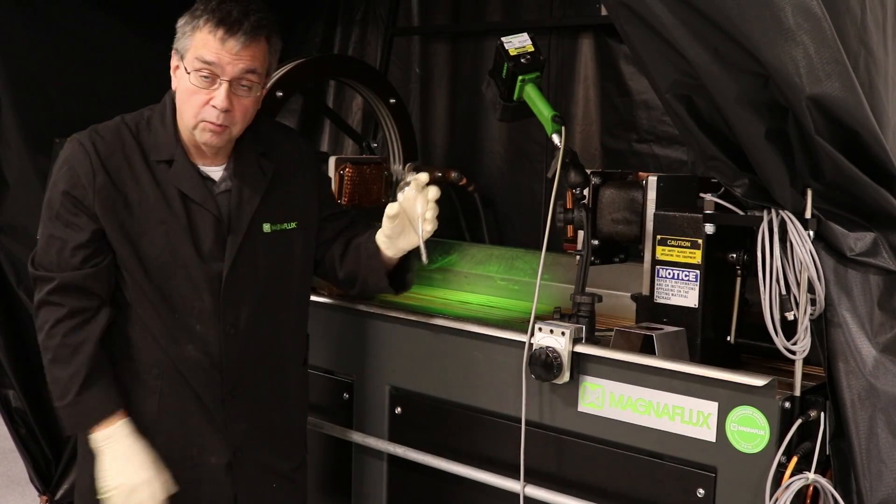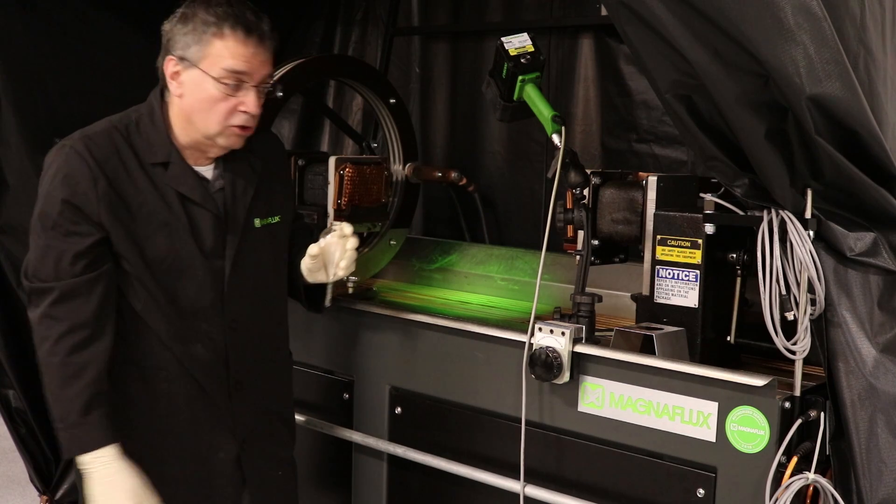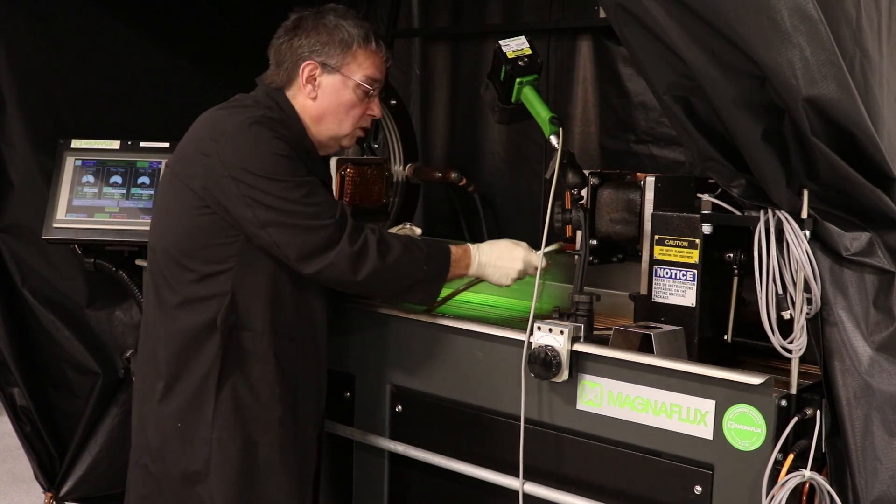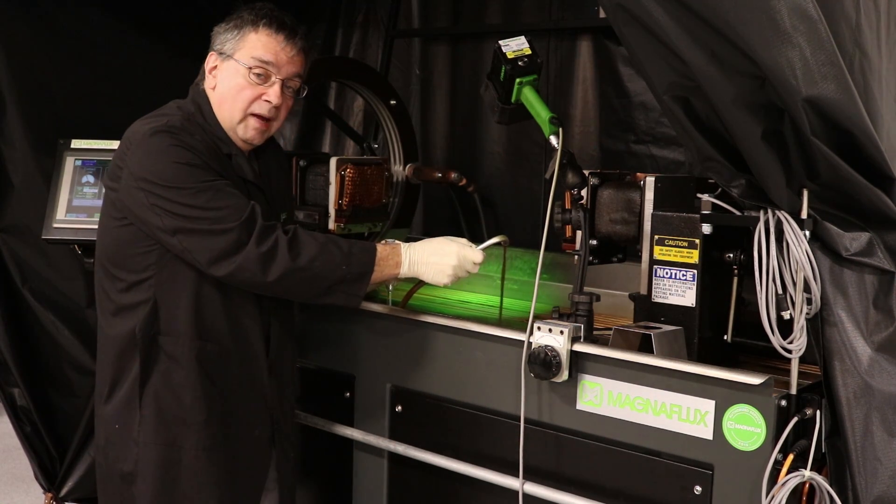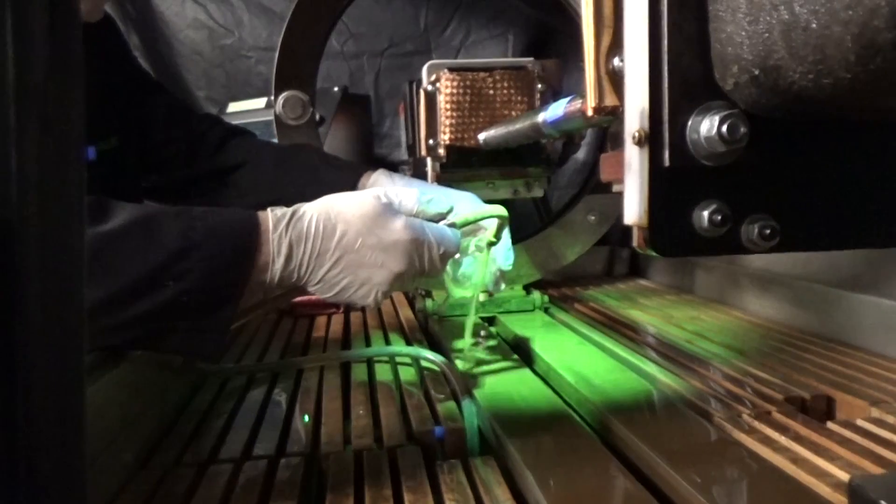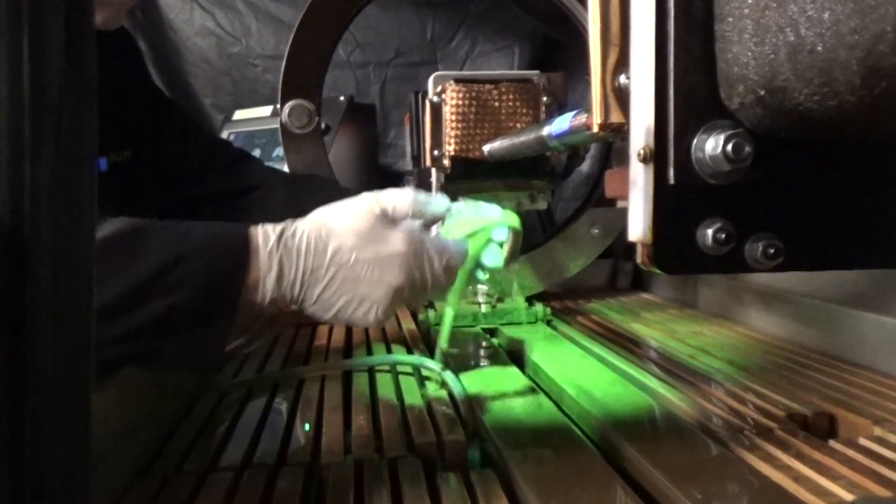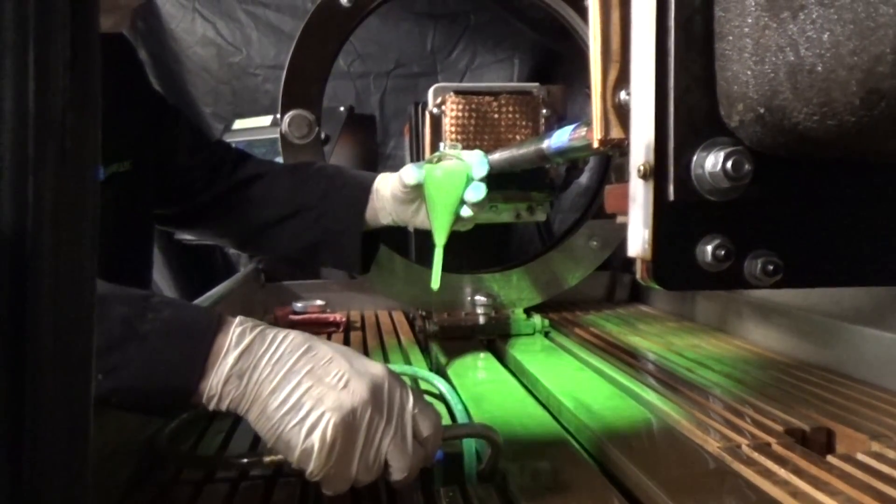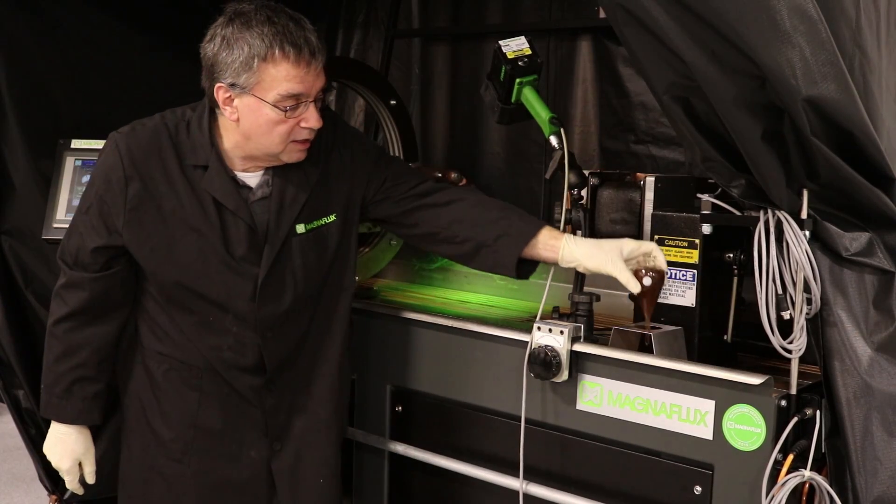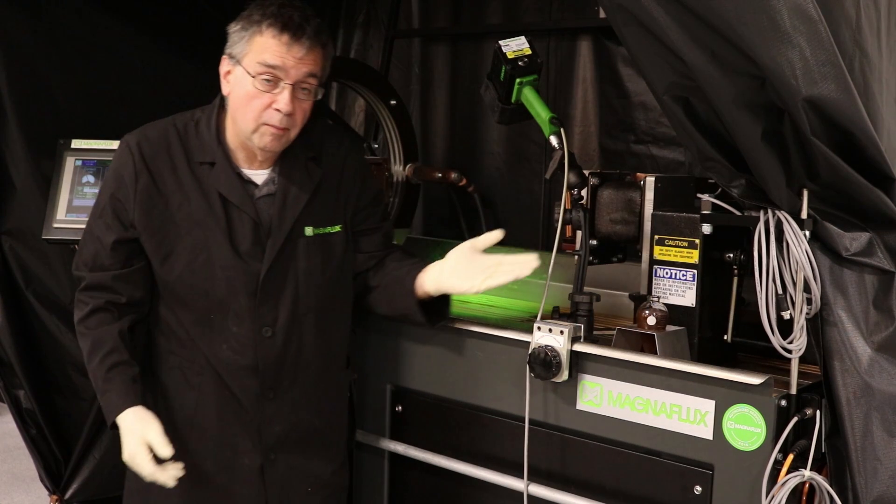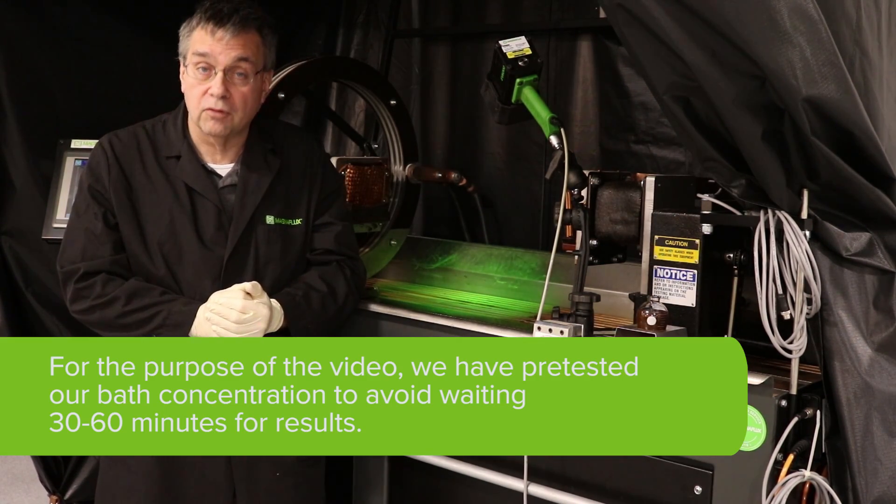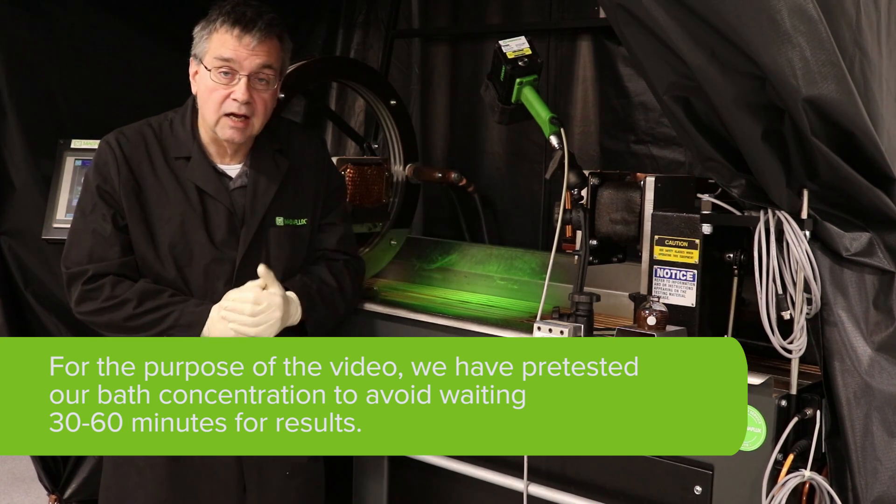We'll need a centrifuge tube, the one appropriate for the particles and fluid you're using in your bath, and your pump has been running. You run fluid through your bath hose until you get particles coming out. Then you fill the centrifuge tube up to 100 milliliters. After that, you place the centrifuge tube in the stand and let it sit. If you're using an oil bath, it has to sit for at least 60 minutes. If you're using a water bath, it is only for 30 minutes. And then you read the concentration.